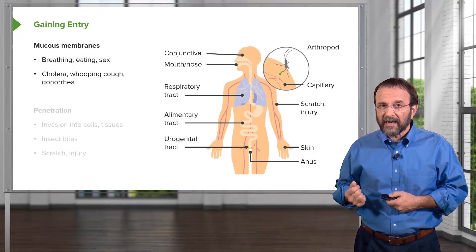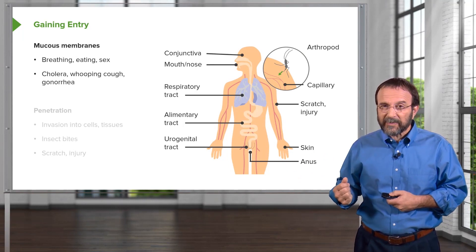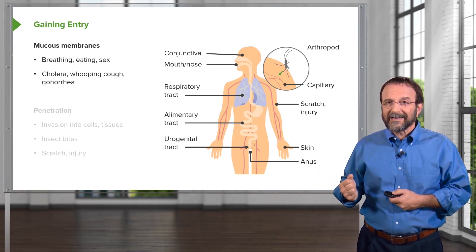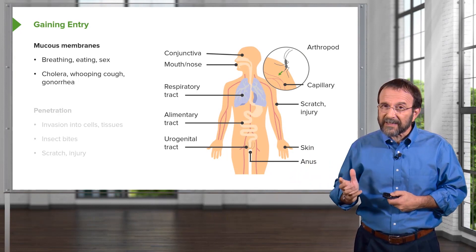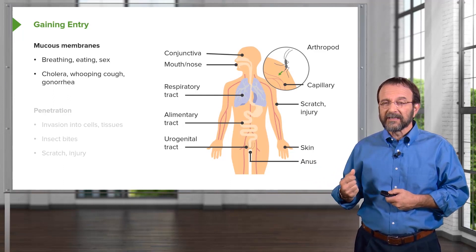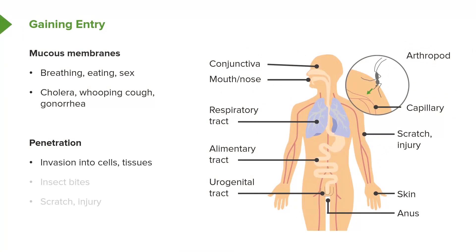We are also covered by a wonderful protective organ called the skin. Skin is the biggest organ in your body — it weighs the most, has the most surface area, and it is a great barrier. The outer layer of your skin is dead, so viruses cannot multiply there; they have to get inside by penetration. But there are ways that the skin can be breached, allowing bacteria to invade the underlying cells and tissues. Insect bites routinely deliver things below the skin, and any kind of scratch or injury will also breach that protective barrier.